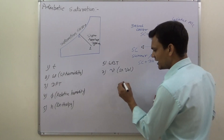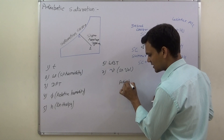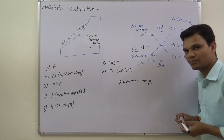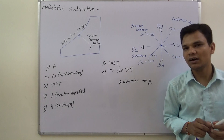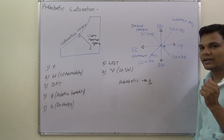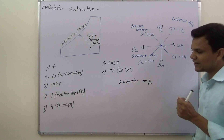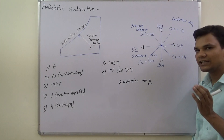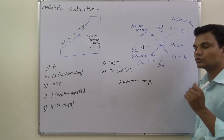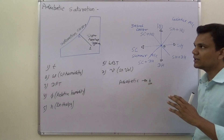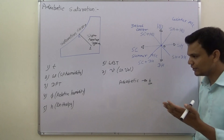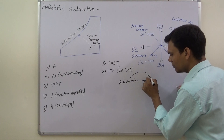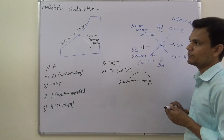The term 'adiabatic' means that the enthalpy during the process will remain constant. For example, in an adiabatic humidification process, the enthalpy during the process will remain constant. The other name of adiabatic humidification is chemical humidification. So in psychrometrics, the term adiabatic means the enthalpy during the process remains constant.